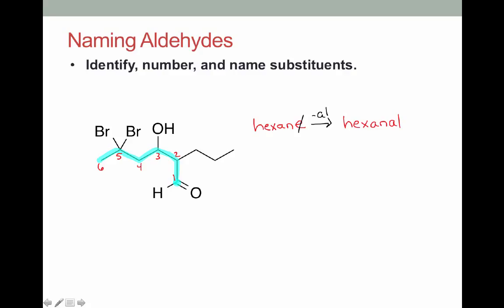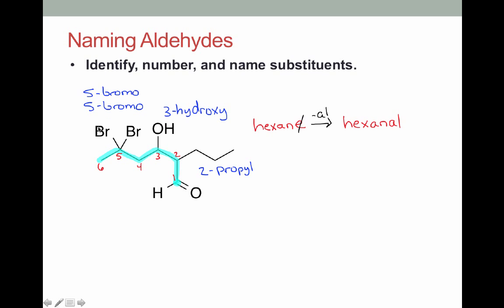Our next goal is to identify, number, and name our substituents, working in increasing number. Our first substituent is on carbon two and it's a propyl group — so there we have our 2-propyl. Carbon three we have a hydroxy. Note that the aldehyde, being a more oxidized carbon, took precedence for the parent name, which is why we're not naming this as an alcohol. So we'll just make this a hydroxy substituent. And then we have two bromines on carbon five — there's our 5,5-dibromo.